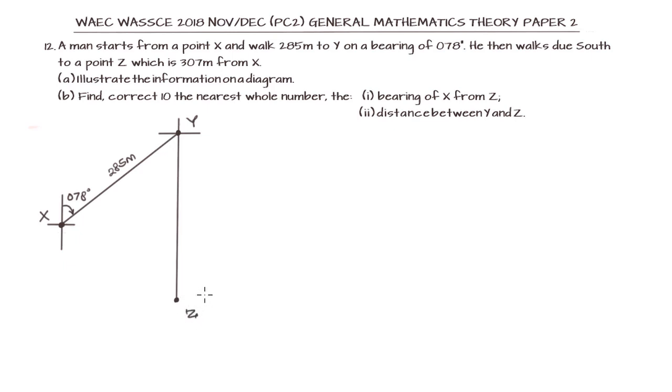We are told that Z is 307 meters away from X. So if we link back to X, that distance is 307 meters. So that's our diagram.